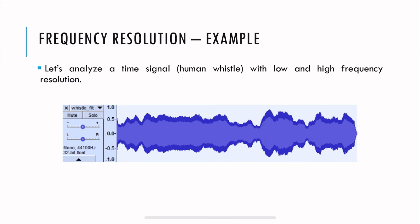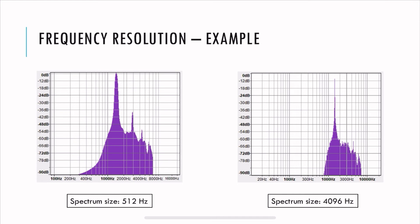Let's analyze a signal with low and high frequency resolution — this is my own whistle recording. On the left, the spectrum size is 512 Hz, and on the right, 4096 Hz. Both are accurate, but the right one clearly pinpoints what frequency is present as a single line, whereas on the left side it looks a little coarse.